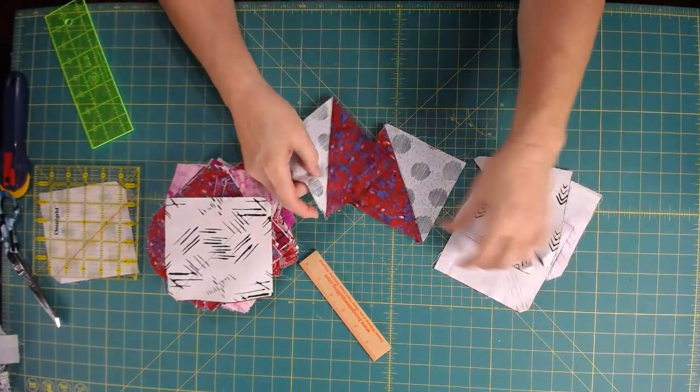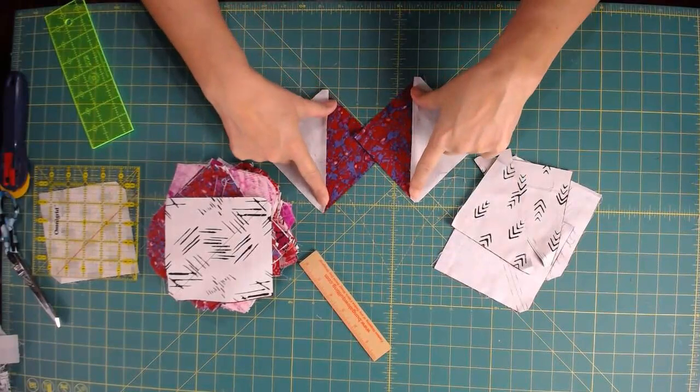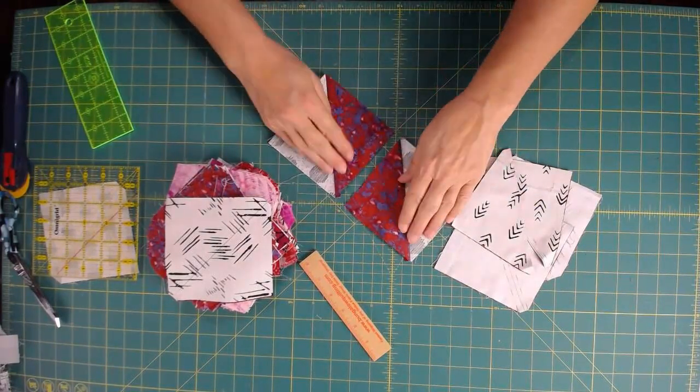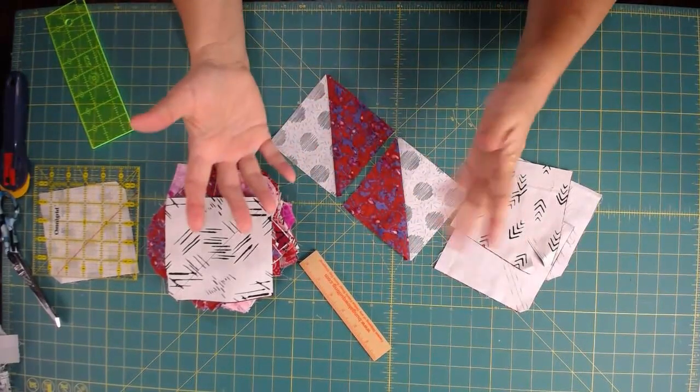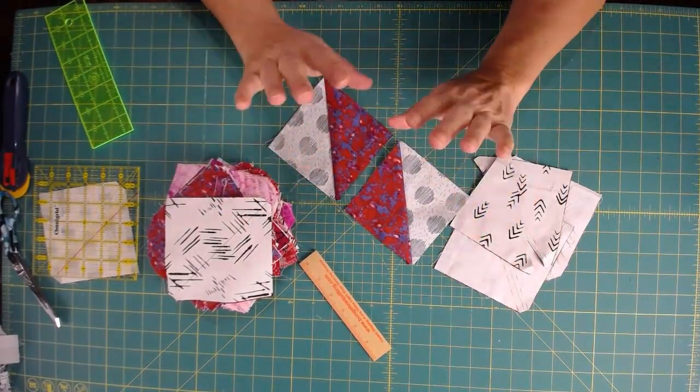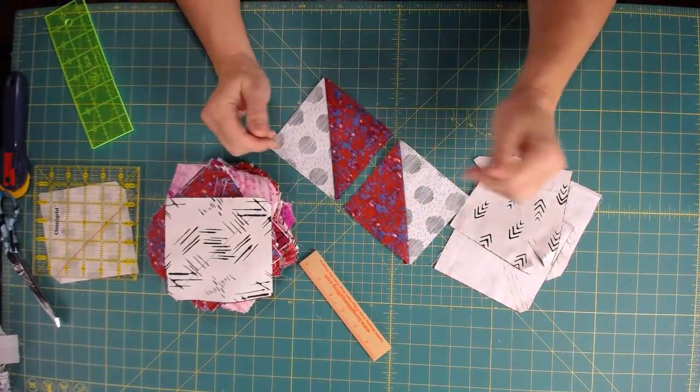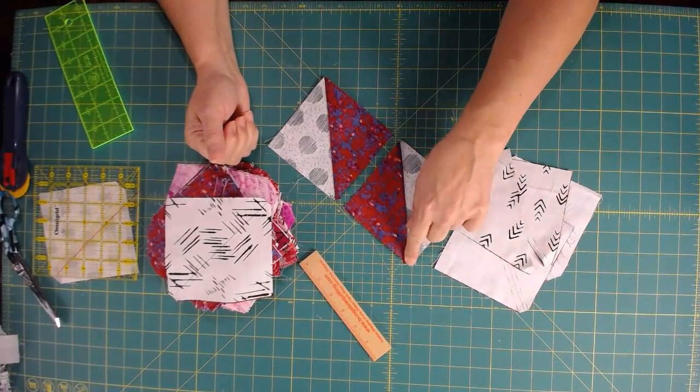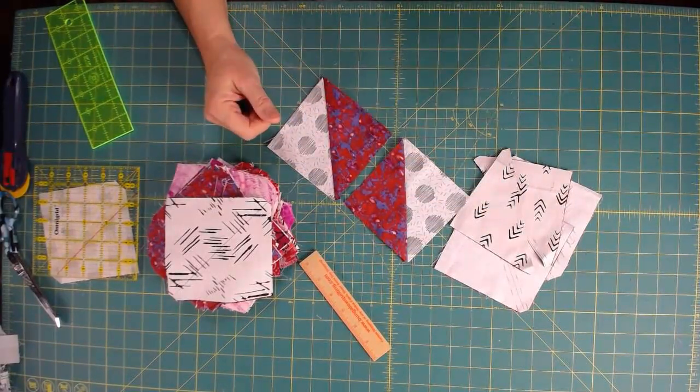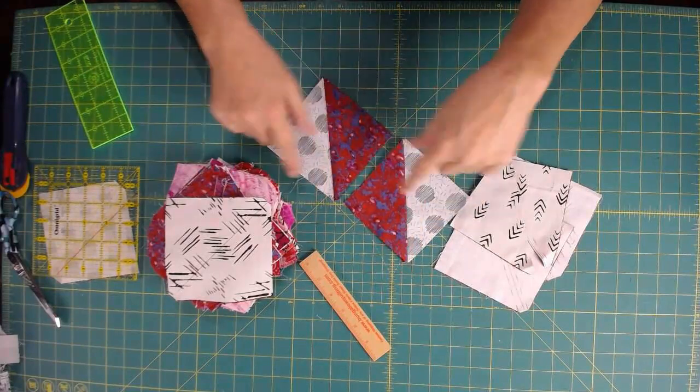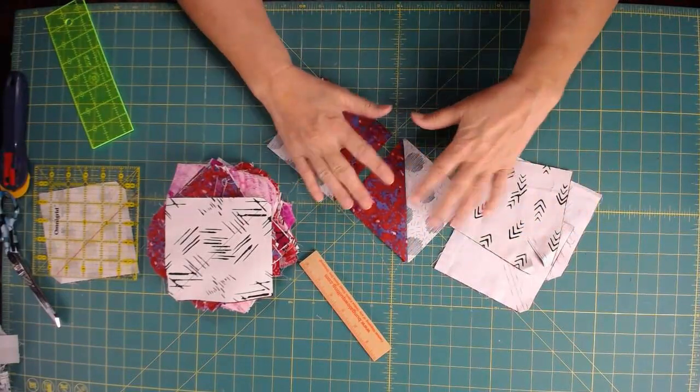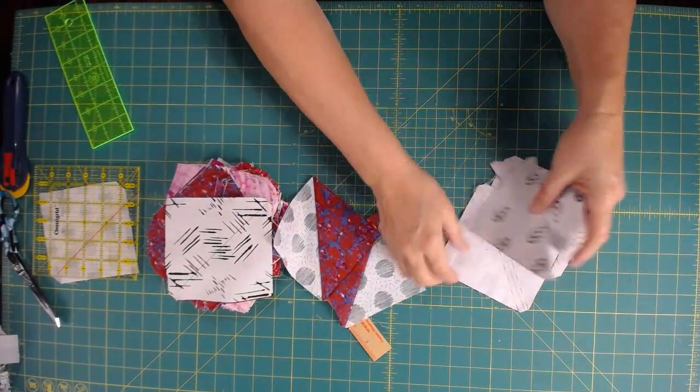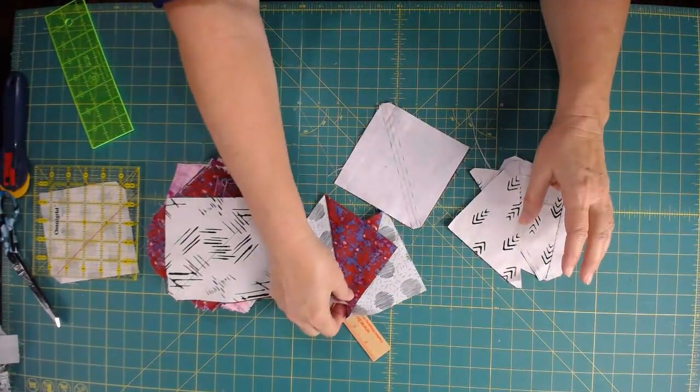Once that's complete, I press them, and I do press it towards the focal fabric, the darker side, instead of the background. Now, if your background is particularly dark, then that would be the opposite. So I always go to the dark side on this. It just works out best for me. Because I trimmed these little corners off as I was sewing, I don't get those little dog ears pointing out that have to be trimmed off later.